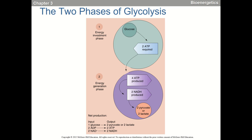Today we'll get into what's happening in the mitochondria — the Krebs cycle or citric acid cycle — where we get the most ATP. In the energy investment phase of glycolysis, we lose two ATP at hexokinase and PFK. In the energy generation phase, we get four ATP and two NADHs. We end with two pyruvate or two lactate. Net ATP gain from glycolysis is only two.